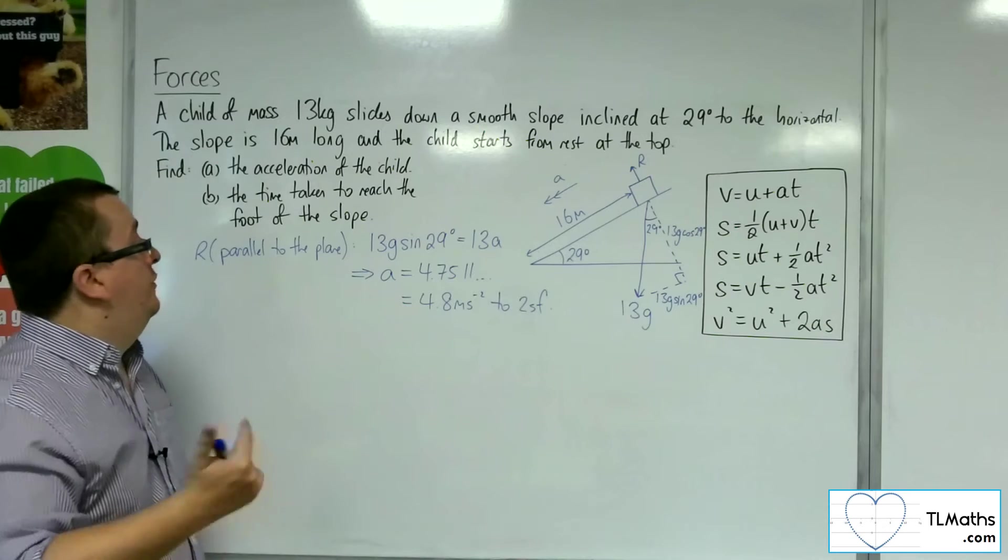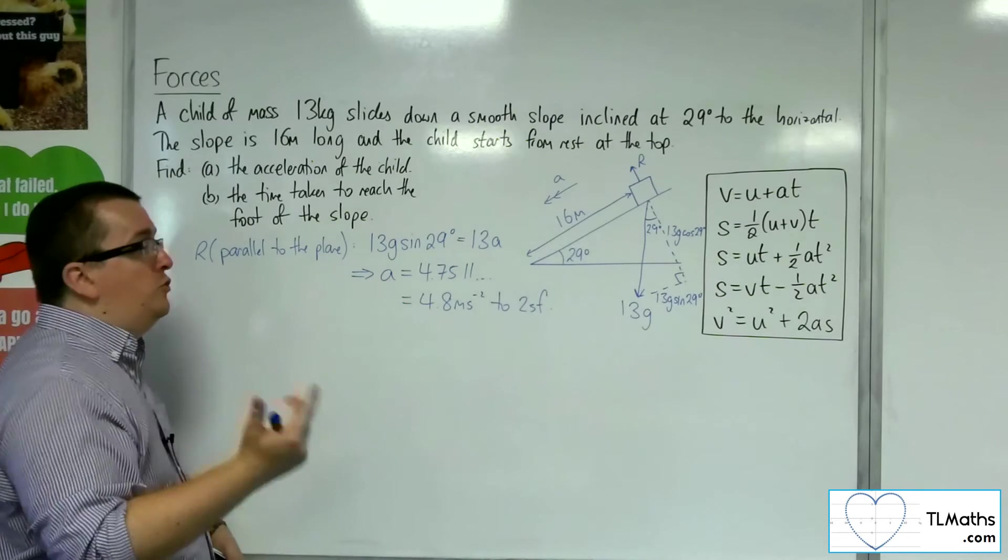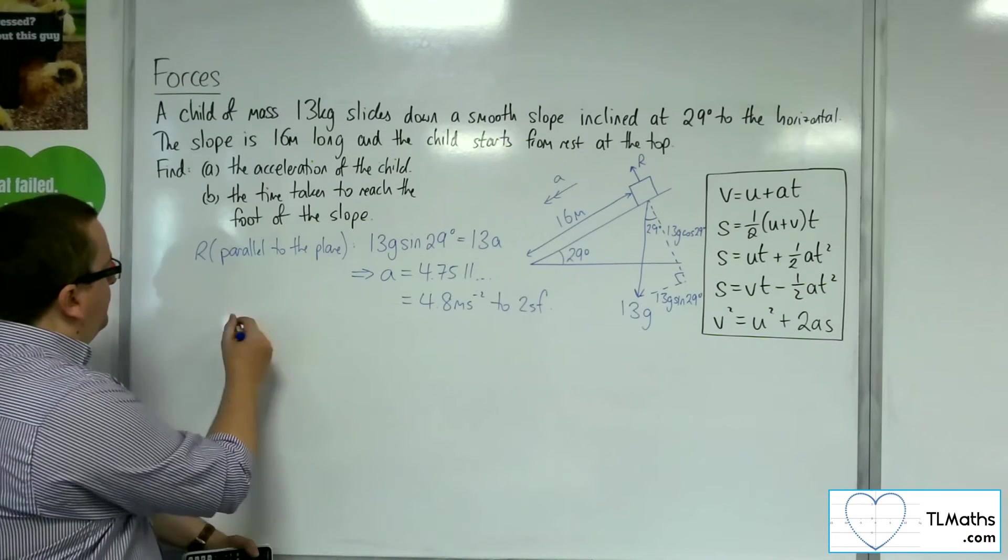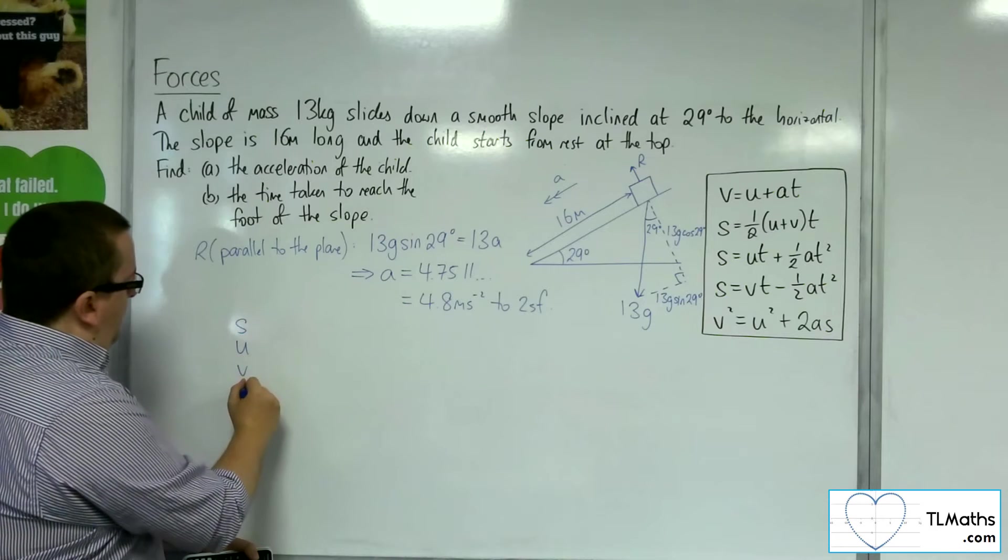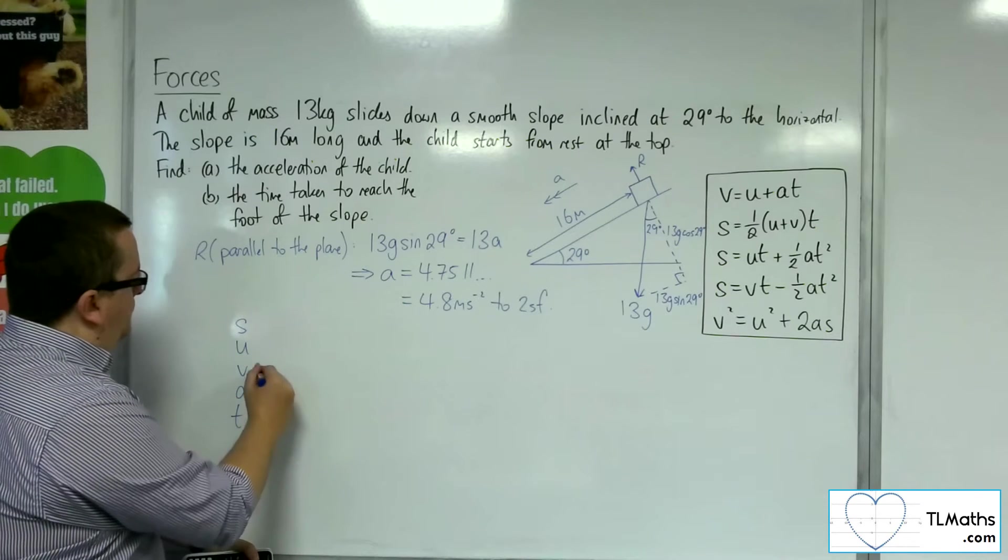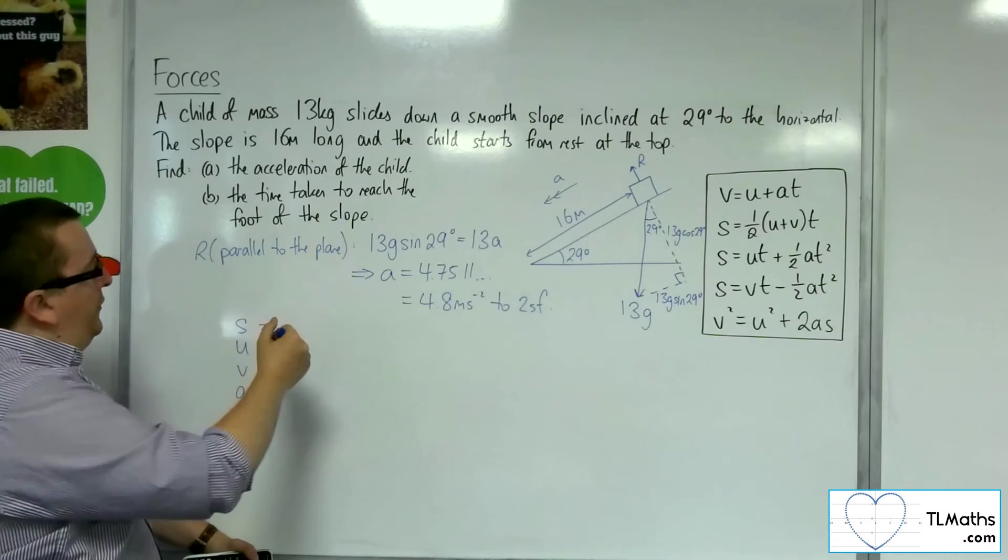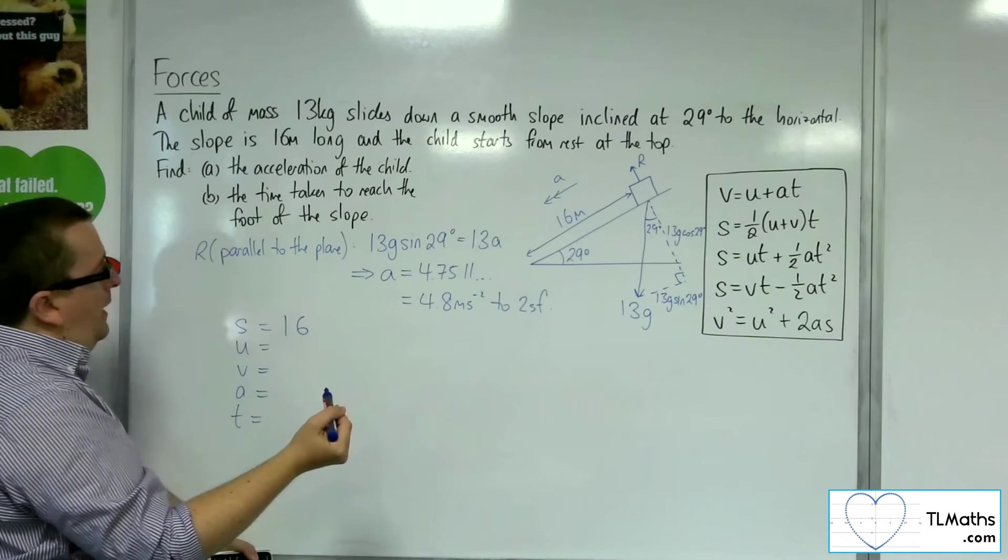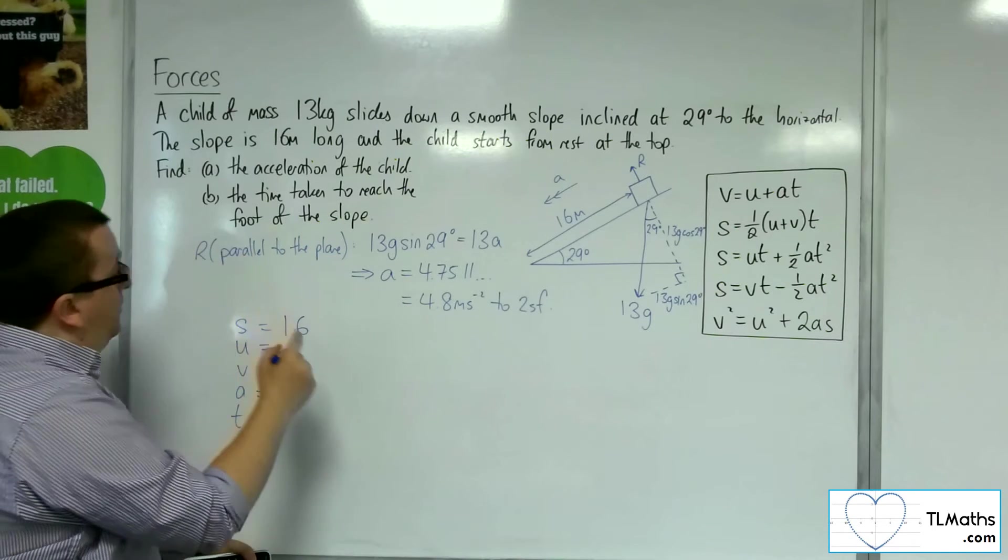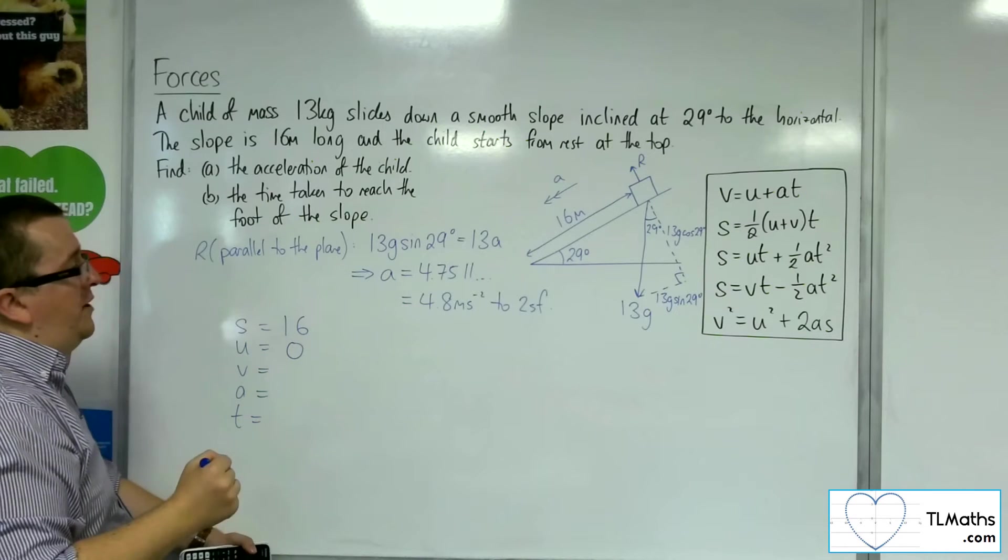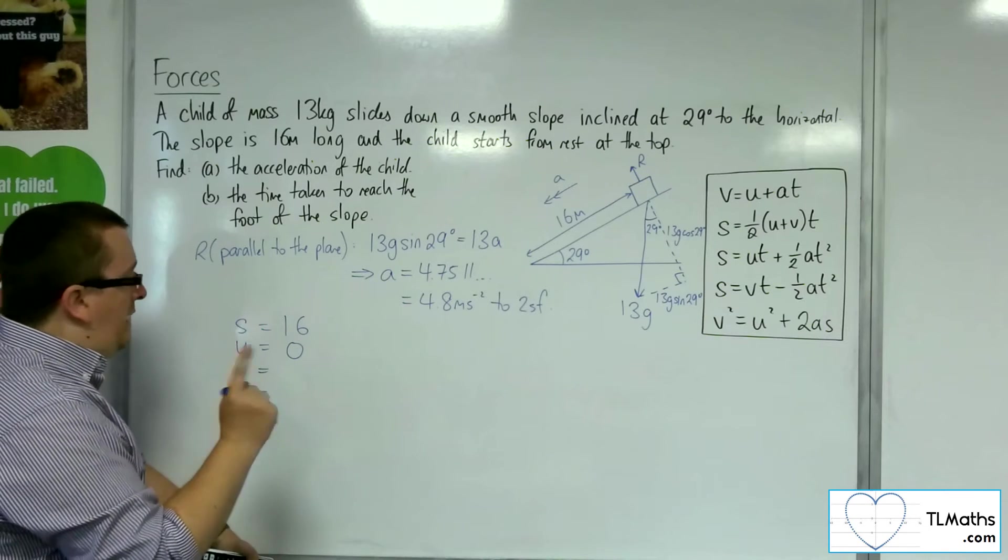Now to find the time taken to reach the foot of the slope, well, this just reduces to a SUVAT problem now. I know that he's got to travel 16 meters. We're starting from rest at the top, so the initial velocity is 0. The acceleration is that 4.8.